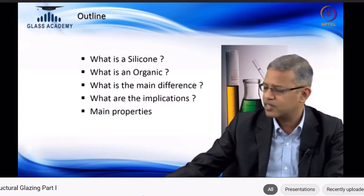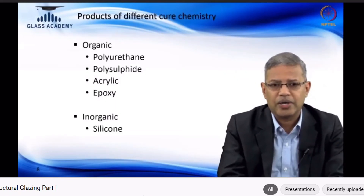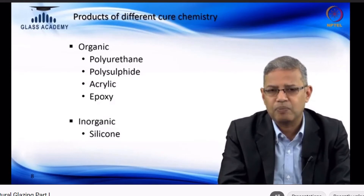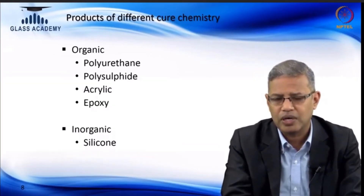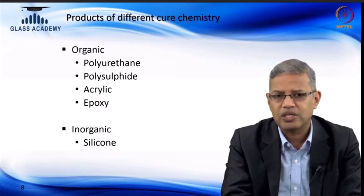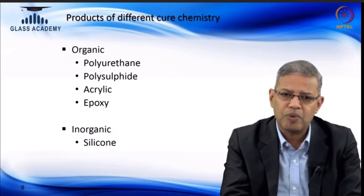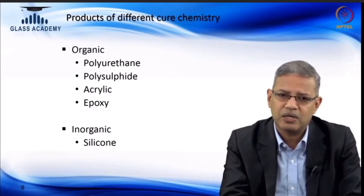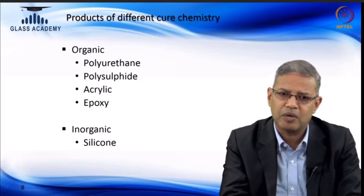We are going to look at what are the essential properties. In terms of organic chemistry, the products which are being used for adhesive applications are generally polyurethane, polysulphide, acrylic, or epoxy. If you know the chemistry, you can also relate them to the brands available in the market.